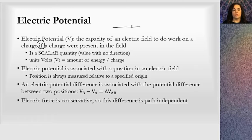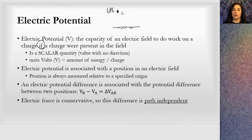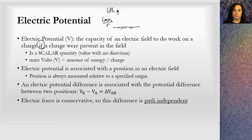If an object is a certain amount above the ground, we would say that this object has some sort of gravitational potential energy. The universal equation is G M1 M2 over R. So it takes two masses in order for an object to have gravitational potential energy.